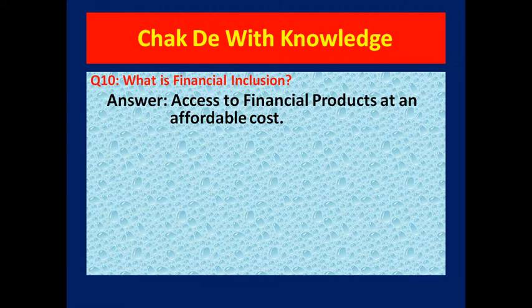For example, if any person wants to open an account with just 5 rupees, and a saving account is available to open with zero or 5 rupees balance, then this will be called an affordable cost. This is the actual definition of financial inclusion: access to financial products at an affordable cost.